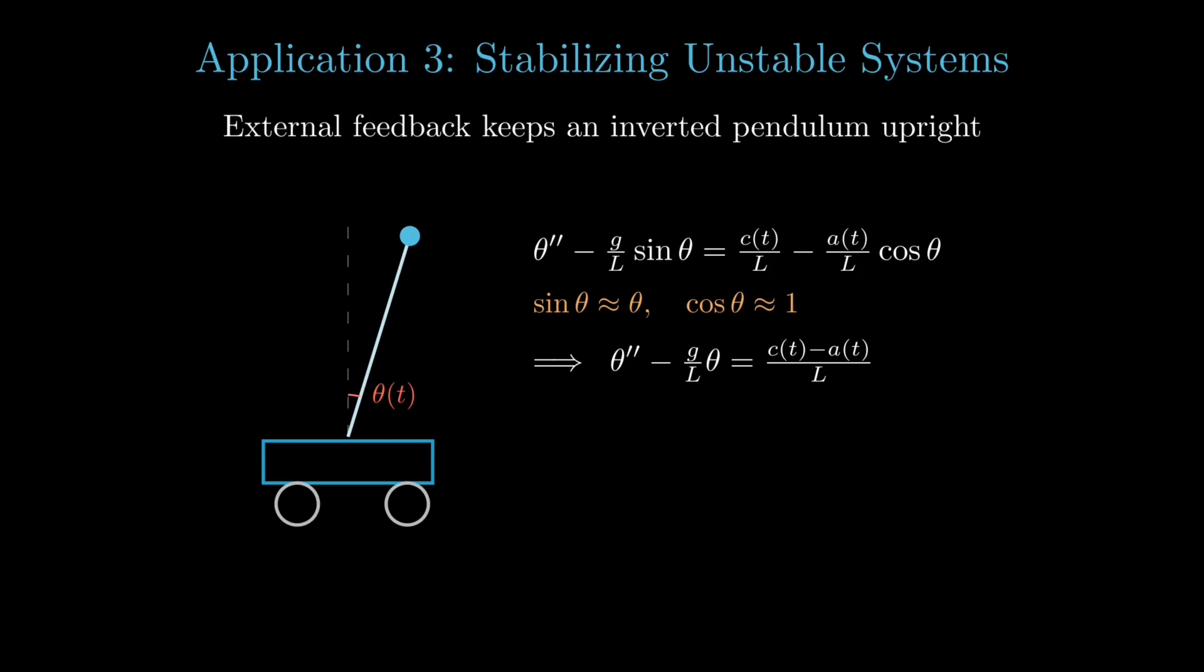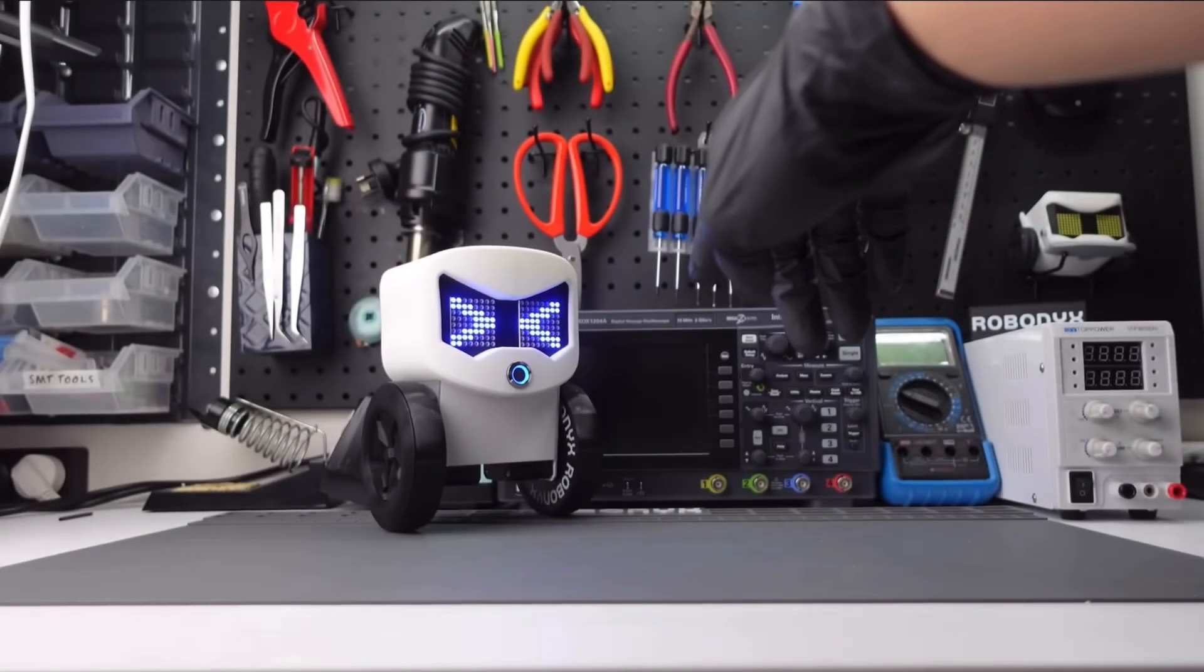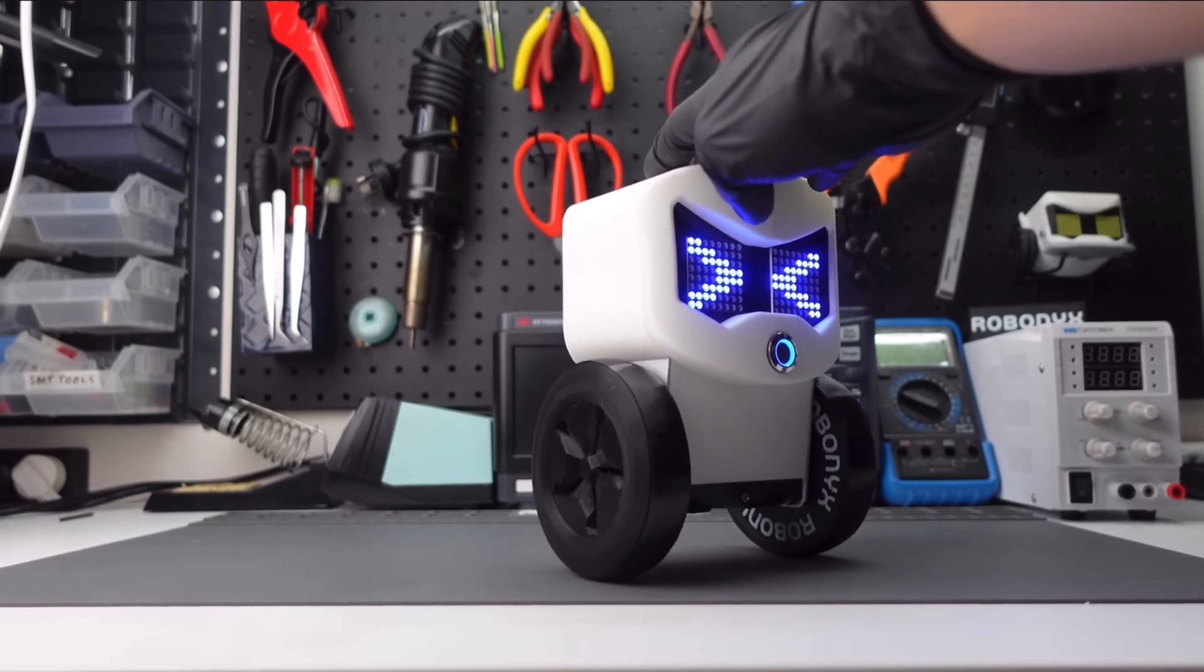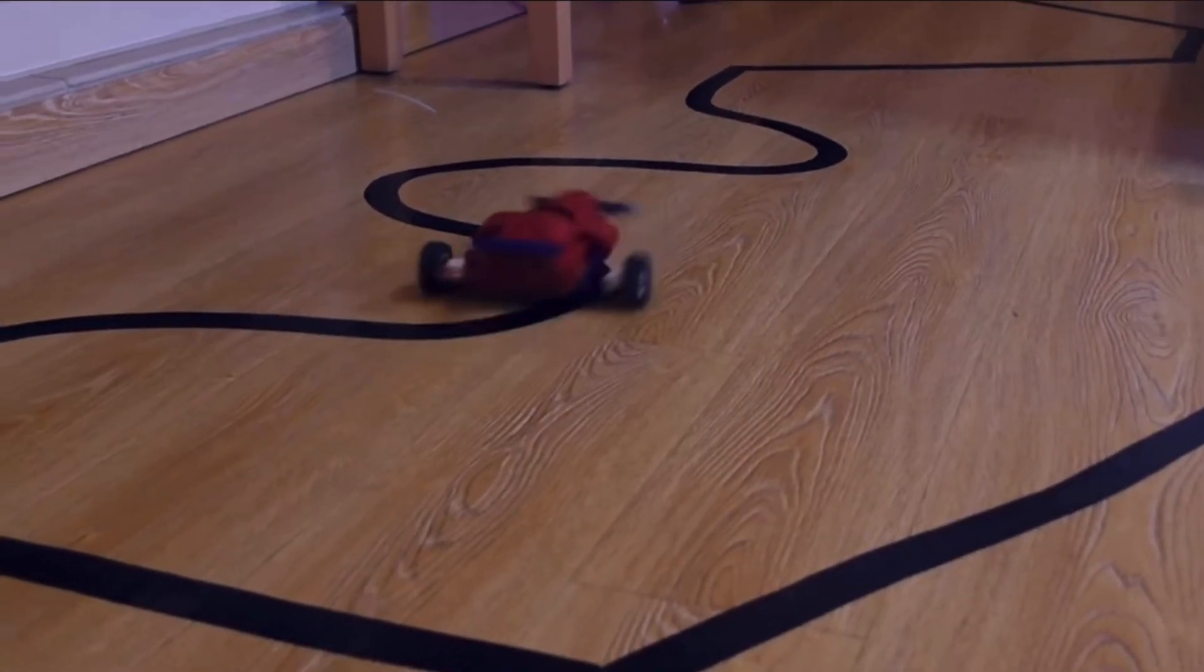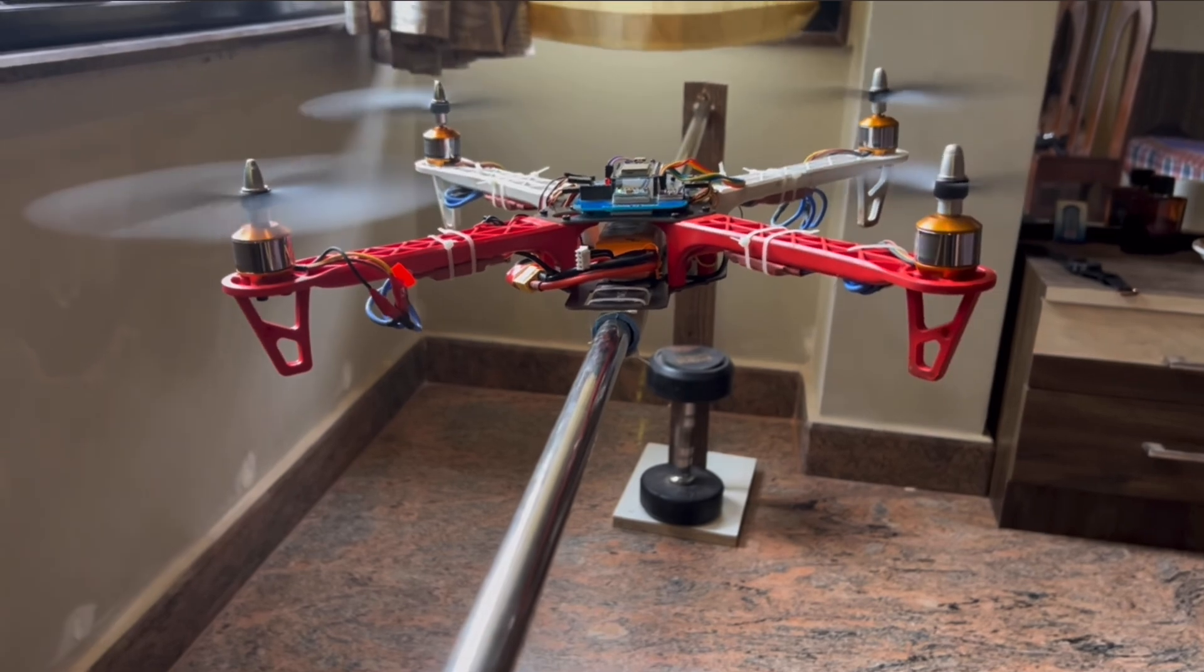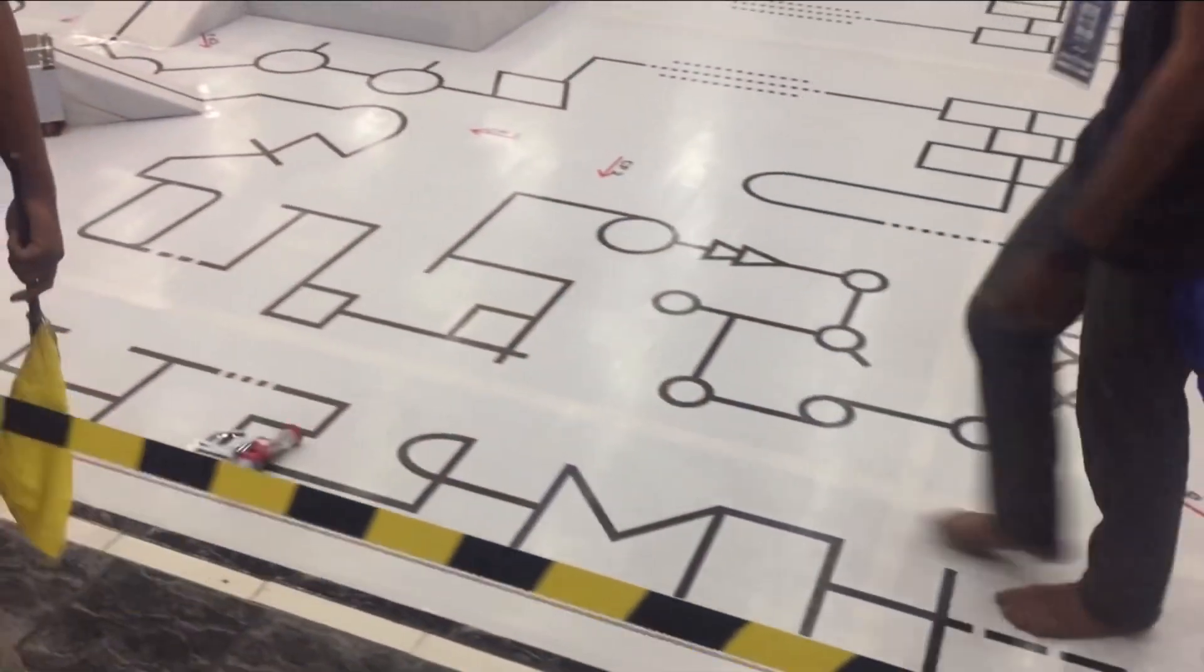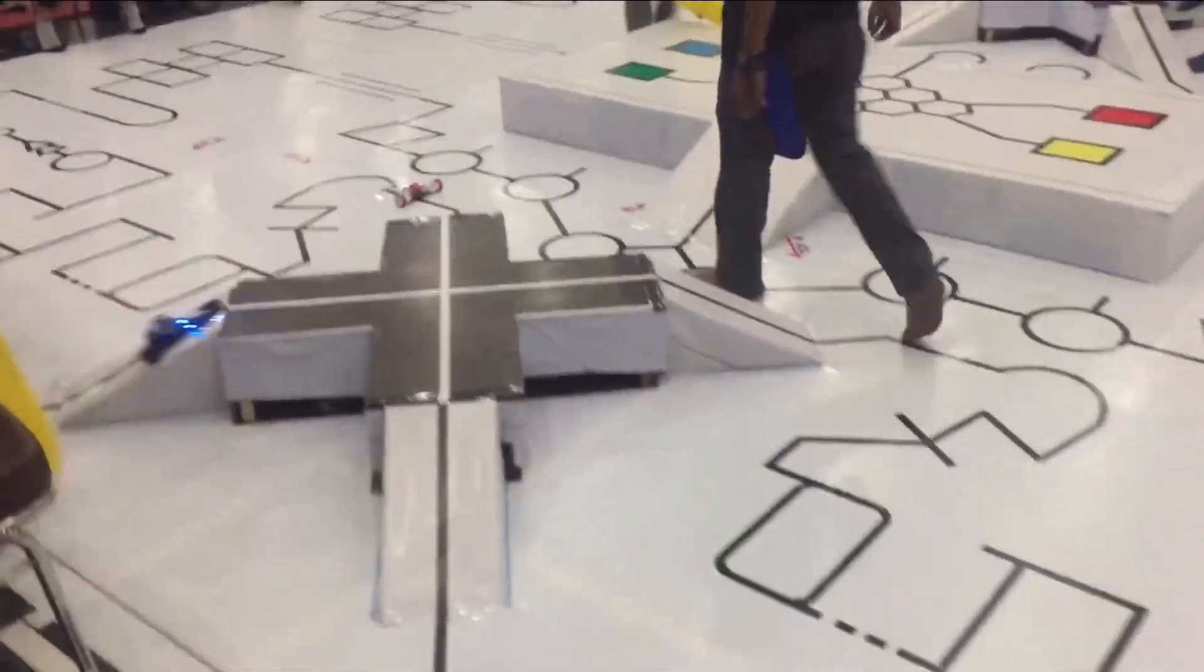Here, theta double prime denotes angular acceleration, g is gravity, and l is the pendulum's length. This simplified linear form allows engineers to design efficient feedback controllers, such as proportional integral derivative or PID controllers, that precisely maintain balance. This principle isn't limited to pendulums and is extensively used in robotics for balancing robots like Segways and drones by modeling human postural control using PID-like feedback mechanisms, ensuring balance and stability during motion.